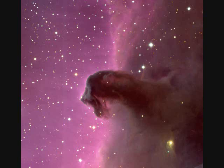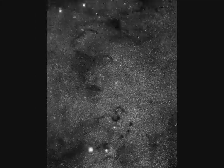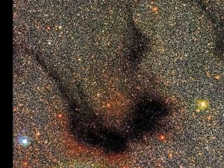If a diffuse nebula occurs far from stars, it neither emits nor scatters enough light to be visible. In fact, its dust particles absorb the starlight from behind them. Such a diffuse nebula is referred to as a dark nebula.